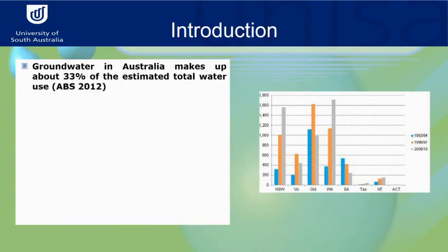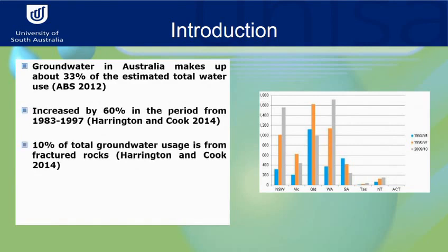I will start with a question about groundwater, as all presentations today are speaking about groundwater. Groundwater is so important for the world and for Australia. For Australia, it makes up about one third of the estimated total water use, according to ABS 2012. There was an increase in water use over three periods of time, rising by 60% in the period from 1983 to 1997. And 10% of the total groundwater usage is from fractured rocks, according to Harrington and Cook 2014.